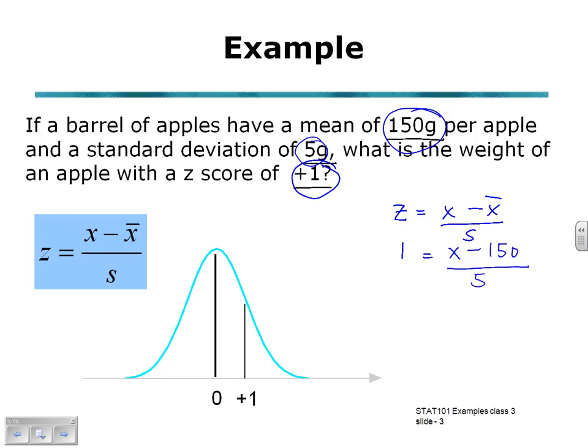So the equation will need to be solved for X to find the weight of this particular apple with a Z-score of 1. To solve the equation, first of all, multiply both sides by 5. Which will give us the next line: 5 equals X minus 150 because the 5's on that right-hand side will cancel.